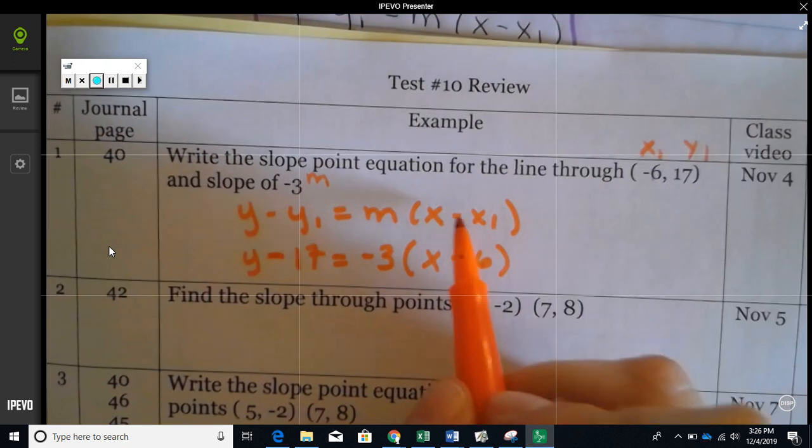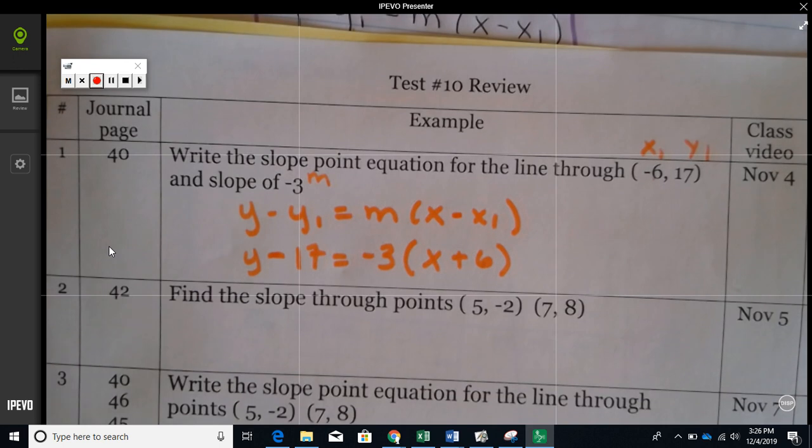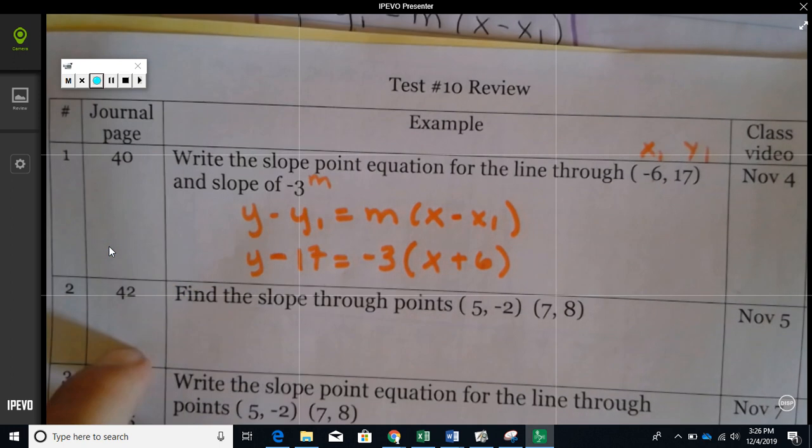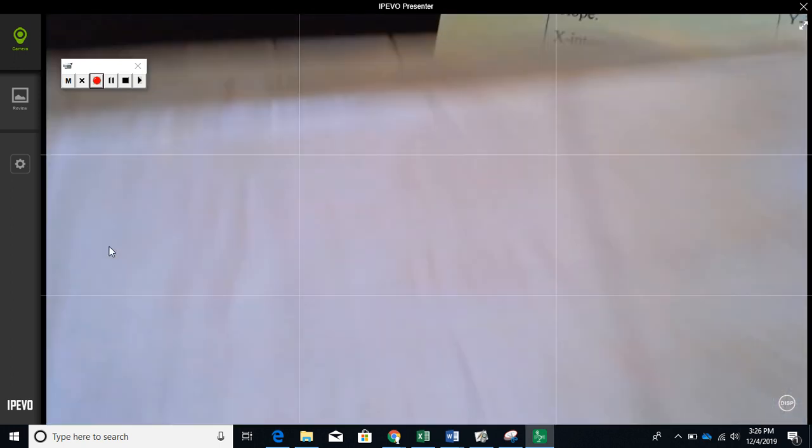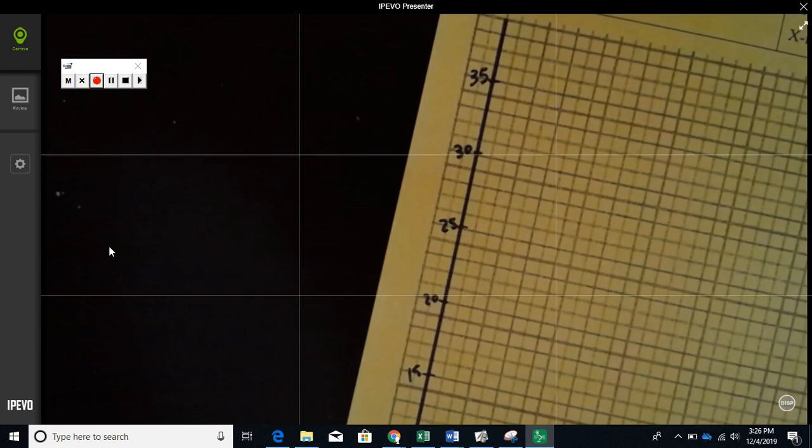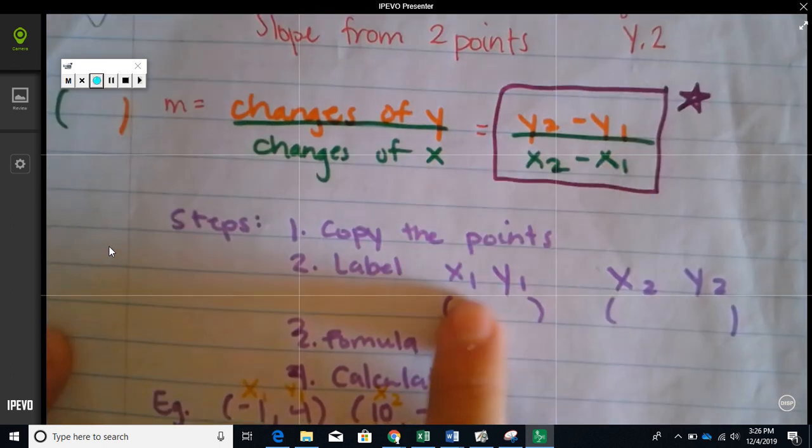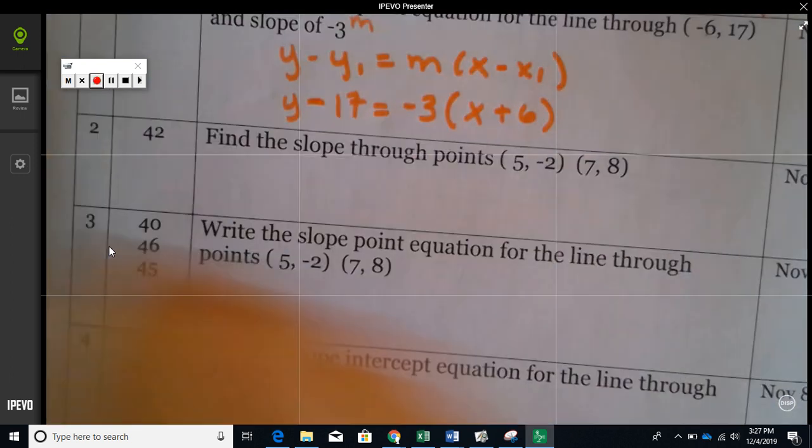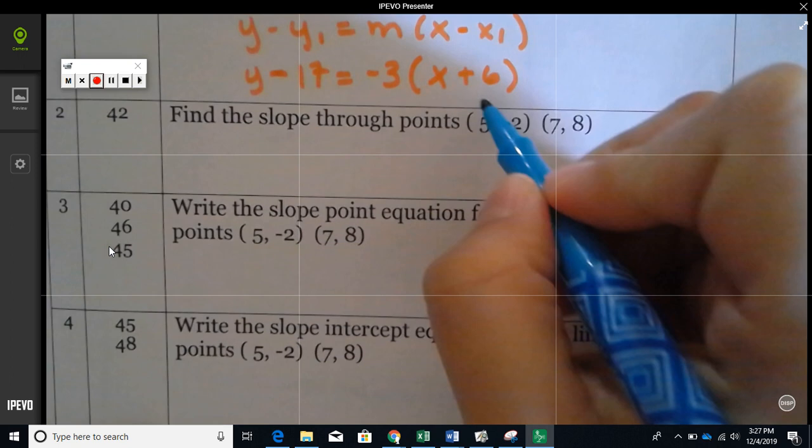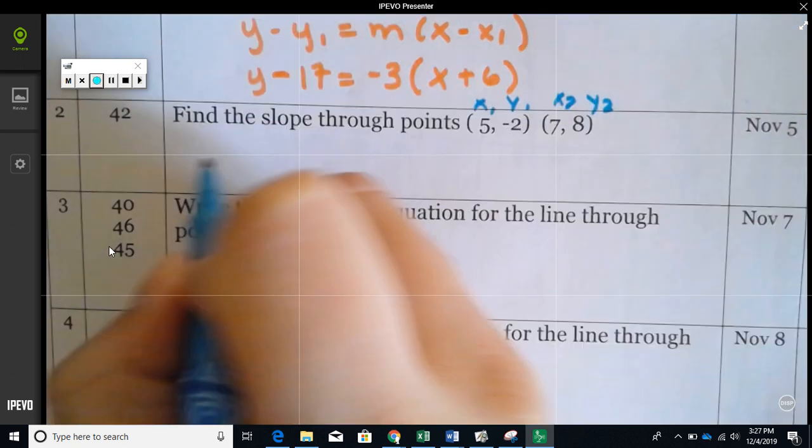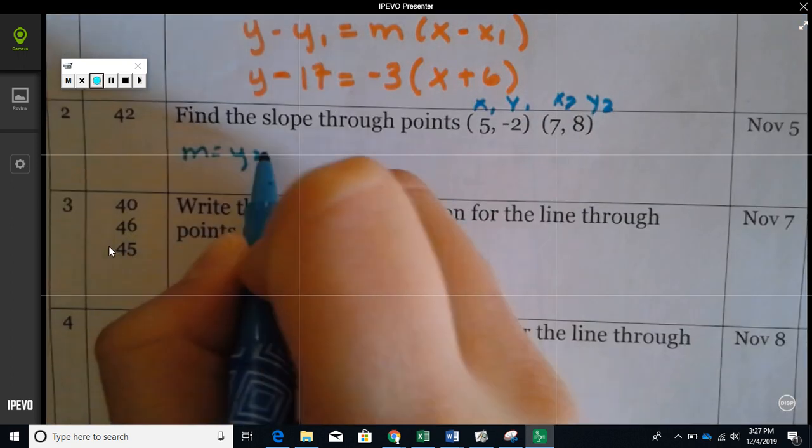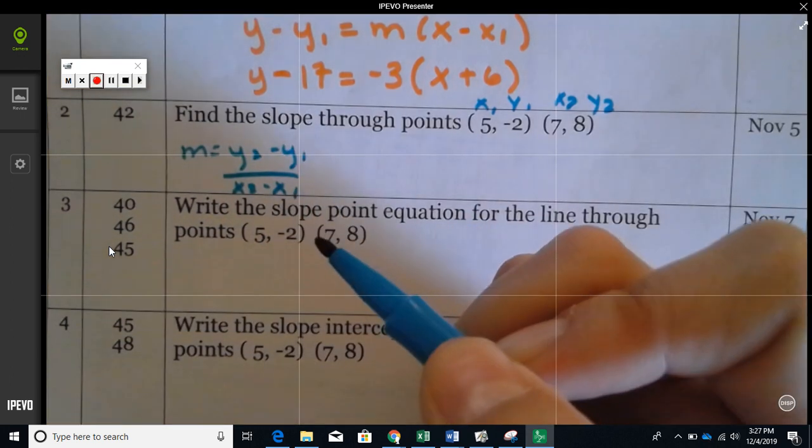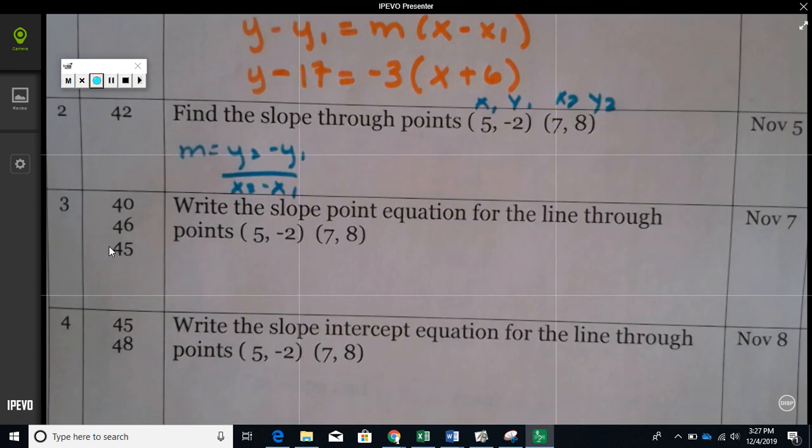Number two, you're finding the slope between two points. That's on page 42. There's a formula. We label x1, y1, x2, y2, and then we use the formula. So let's do that right here. Let's label x1, y1, x2, y2. The formula is y2 minus y1 over x2 minus x1.